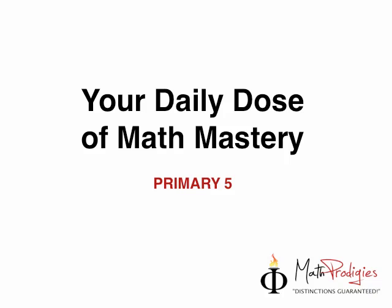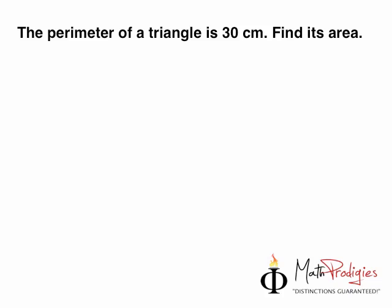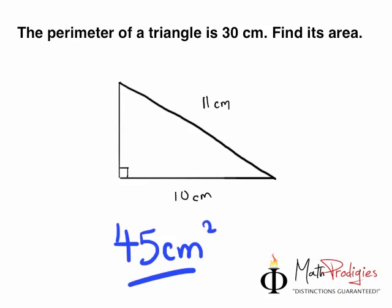Yesterday's question was, let's take a look here. The perimeter of a triangle is 30 cm, find its area, and the answer is 45 cm squared. If you got it right, give yourself a high five. You are a Math Prodigy, good job.